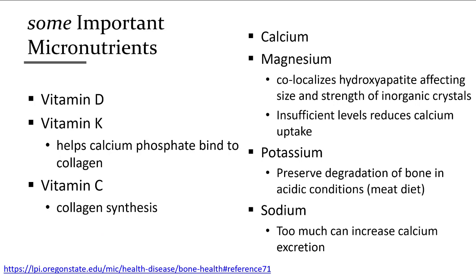Some important micronutrients that make up bone are vitamin K, vitamin D, vitamin C, calcium, magnesium, potassium, and sodium. When people think of bone minerals, they can't get past calcium, but in order to have healthy bones, you have to have a balance of all of these in addition to others — not just calcium.